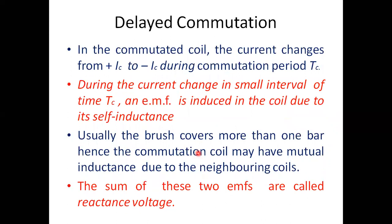Next is delayed commutation. In the commutated coil, the current changes from positive I to negative I during the commutation period TC. During this short interval TC, an EMF is induced in the coil due to its self-inductance. Since commutation means reversal of current, say from 20 amperes gradually reducing to 0, then rising in the negative direction to minus 20 amperes, we are changing current during a very short commutation period. When there is a change in current, an induced EMF is produced.